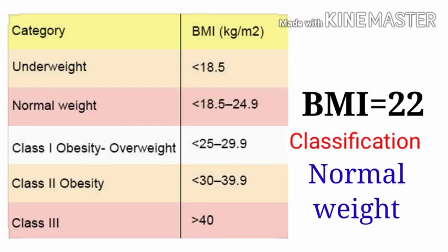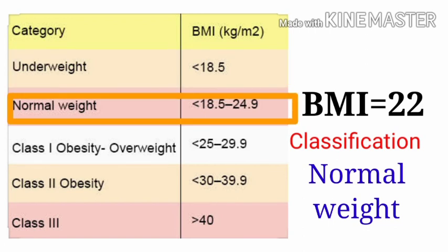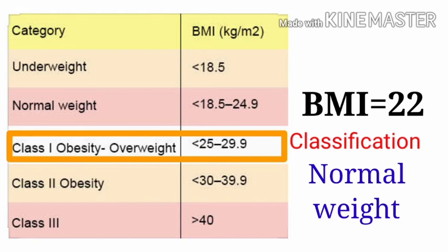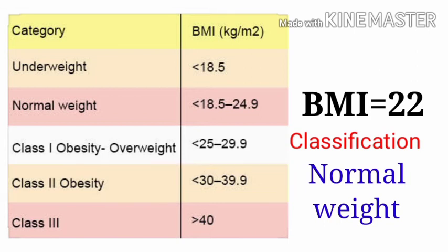Here is how to check your BMI classification: Underweight is 18.5 and below; Normal weight is 18.5 to 24.9; Overweight is 25 to 29.9; Class 2 obesity is 30 to 39.9; and Class 3 obesity is 40 and above.